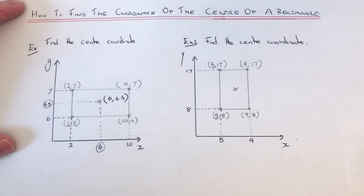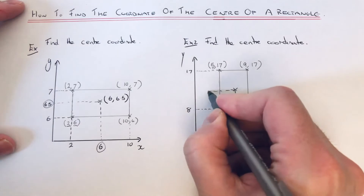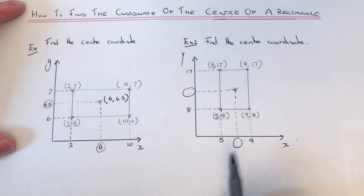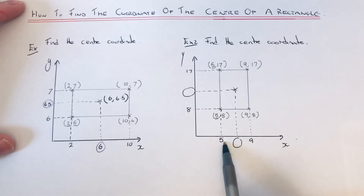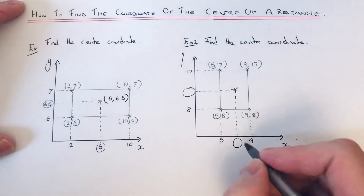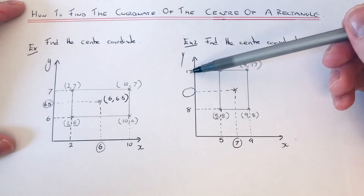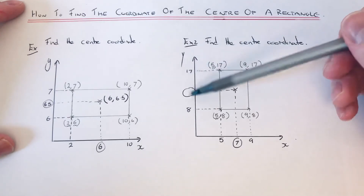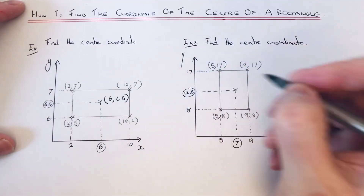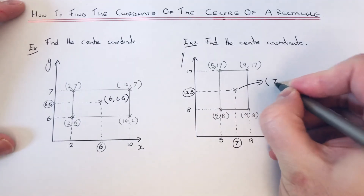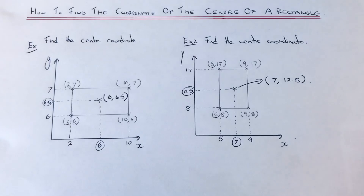Now we need to find the center coordinate — the number on the x-axis halfway between five and nine, and the number on the y-axis halfway between eight and seventeen. For x: nine plus five is fourteen, halved gives seven. For y: seventeen plus eight is twenty-five, halved gives twelve point five. So the center coordinate is (7, 12.5). If you like this video, make sure you like and subscribe — see you next time, bye!